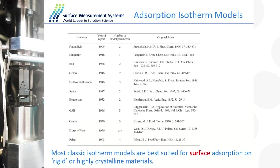Over the years, a wide range of isotherm models have been developed. Once I get an isotherm, I can fit it to either an empirical, semi-empirical, or fundamental model — this is only a small selection of them. Most classic isotherm models assume surface adsorption only. When we think of a DVS experiment, I can use water, ethanol, acetone, or some other solvent where the material might be partially soluble. So a lot of classic equations, like the Langmuir or BET equation, only assume surface adsorption, which is important.